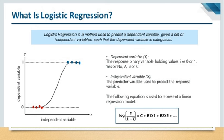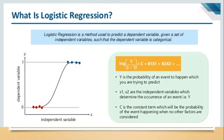In logistic regression, the dependent variable is the categorical variable. The equation used to represent logistic regression is log(y / (1 - y)) = c + b1x1 + b2x2 + ... In the graph, the best fitted curve for logistic regression is the S-shaped curve. Here, y is the probability of an event happening which you are trying to predict.